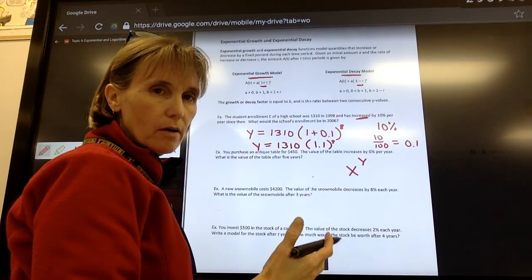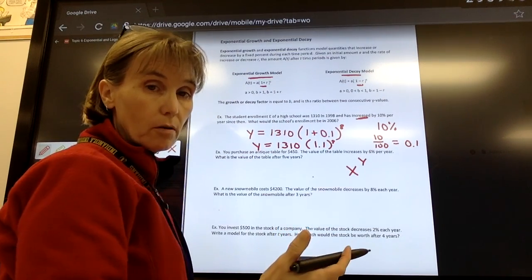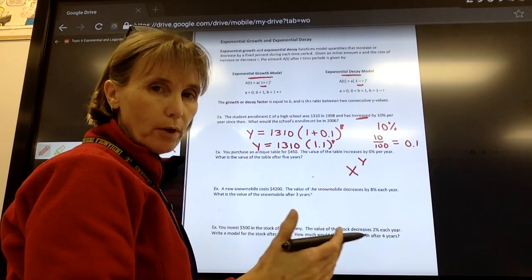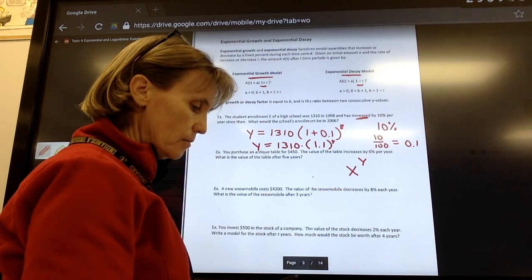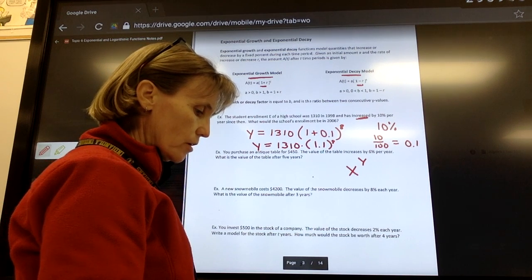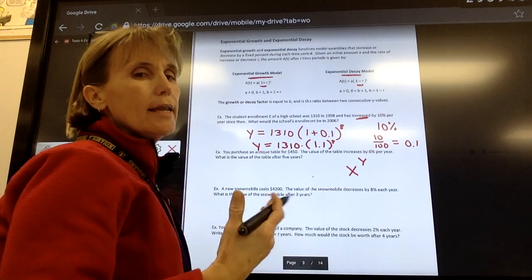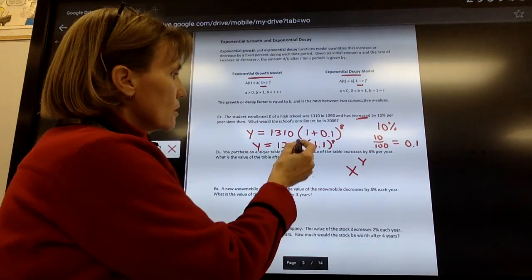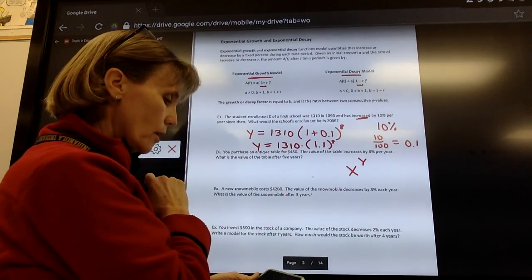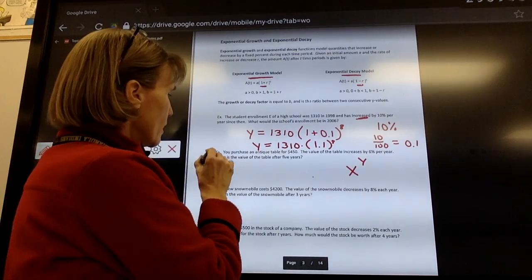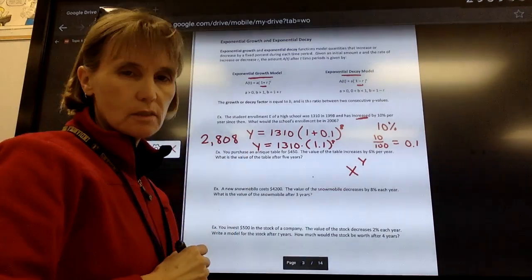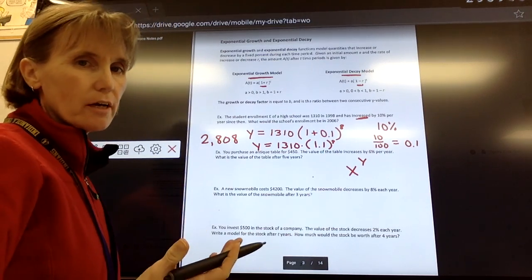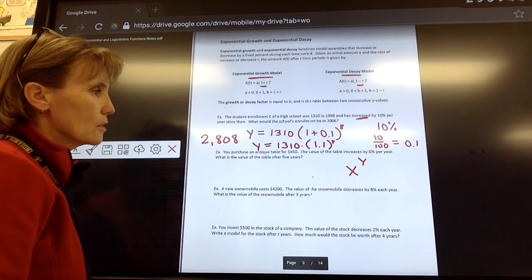You're going to get a decimal, it should be a long decimal. Don't round it off at that point. Just leave that value. Then you just want to hit the times sign. We're multiplying there. So you hit times, and then put in 1,310. Hit equals. Now we're going to round. Since this is in the context of people, I'm going to round to the nearest whole number. And I'm going to say that's 2,808 students, which is what I would project the enrollment in the year 2006.